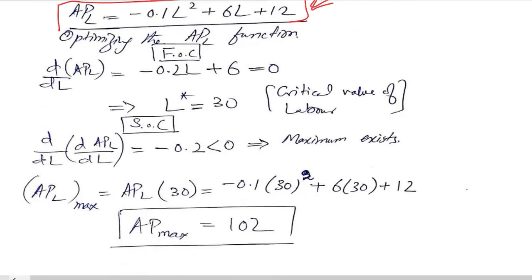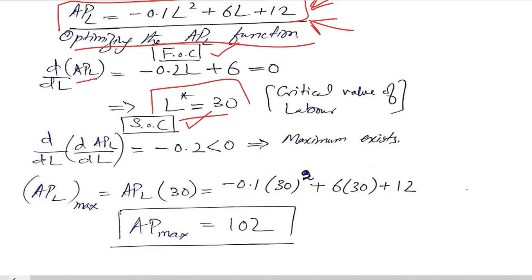To optimize the average production function, we calculate the first order condition and then the second order condition to find the critical value. We take the derivative of the average product of labor with respect to labor and set it equal to 0, as required by the first order condition. Solving this gives us the critical value of labor, which is 30.